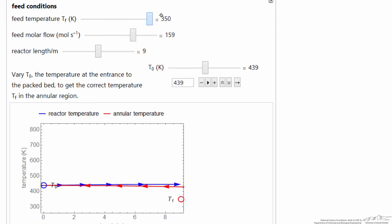We can change the feed temperature over a relatively narrow range, and then change T0 to get the correct solution. We can change the flow rate, and this will affect how much time for a reaction. As we change the flow rate, it's going to affect what happens.